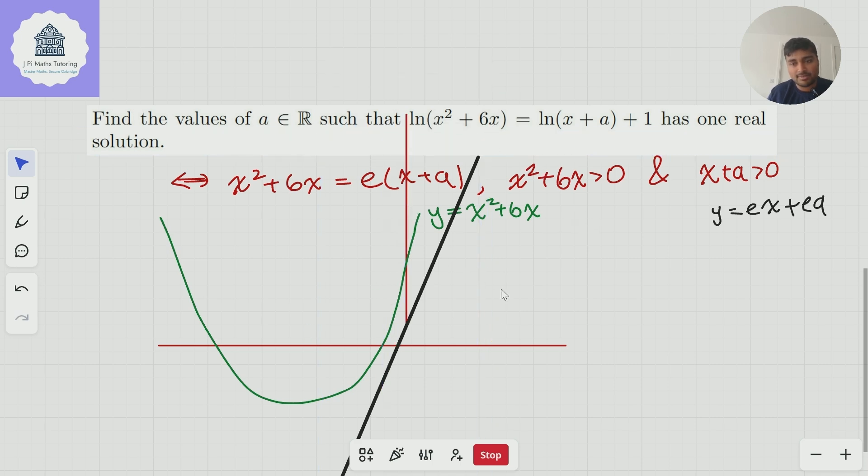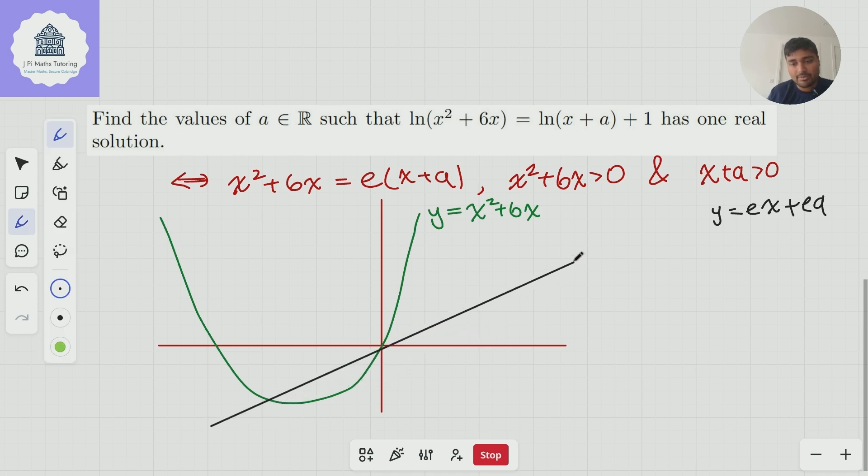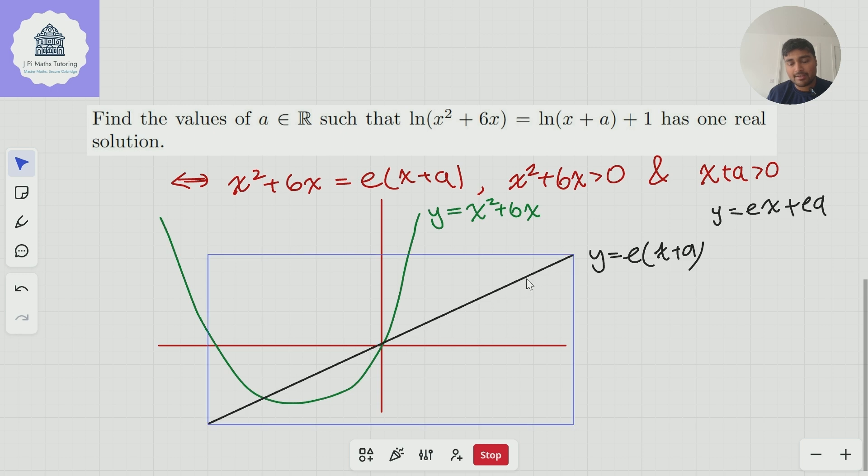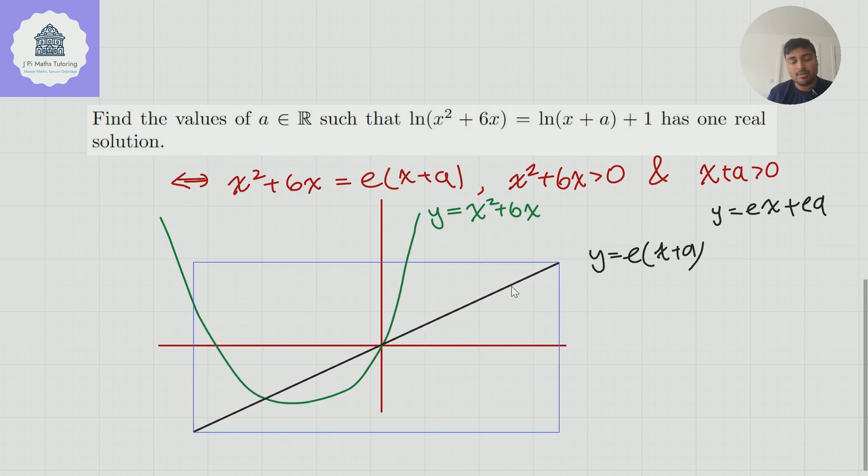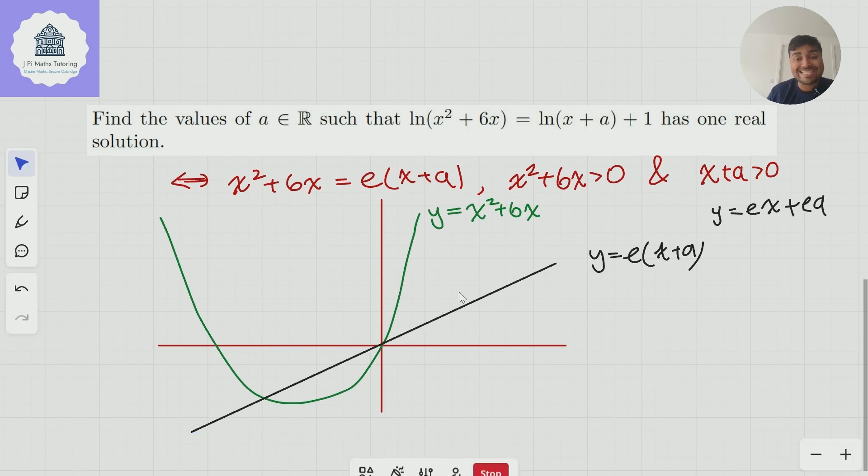Let me get rid of this and draw a new one with a shallower gradient. So maybe something like that. So this is going to be the line y = ex + a. Now the idea is this is when a is 0, at least how I've drawn it when it passes through the origin. And we're moving it up and down.